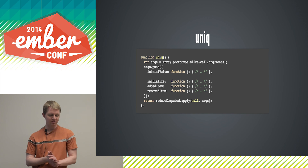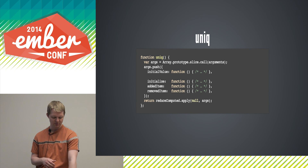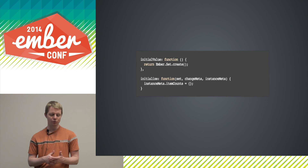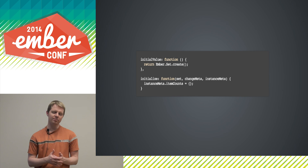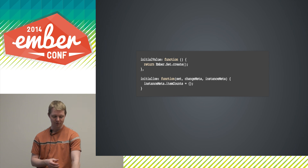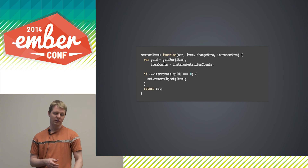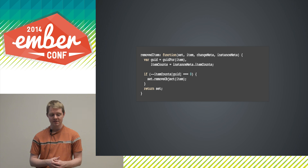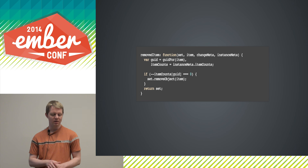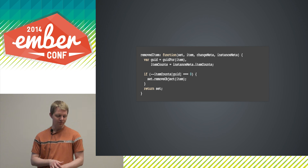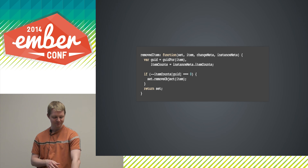Here's one last example using reduce computed — how you could implement a unique function with set semantics. Our initial value is just going to be a Set. We'll have an instanceMeta that keeps track of counts of items. When an item is added, we count how many times we've seen it — if it's the first time, we add it to the set. When an item is removed, we reduce the count, and if it's down to zero, we remove it from the set. Depending on the expected size of the set, you might also delete the entry from the scratchpad at that time.